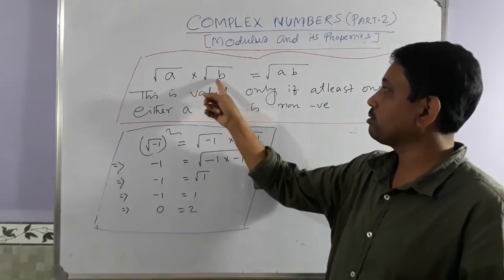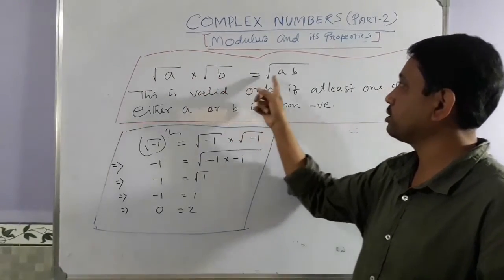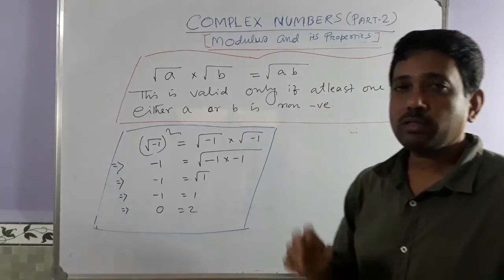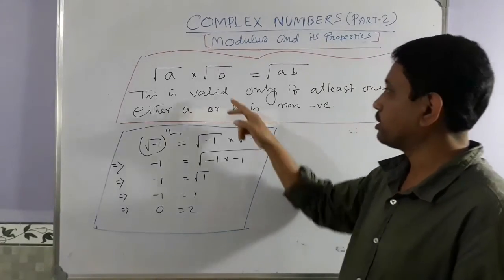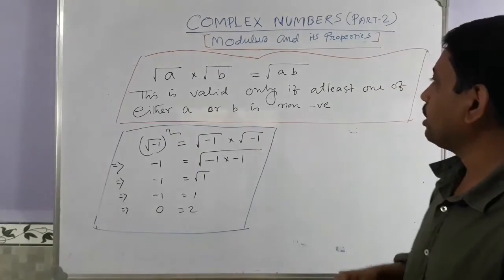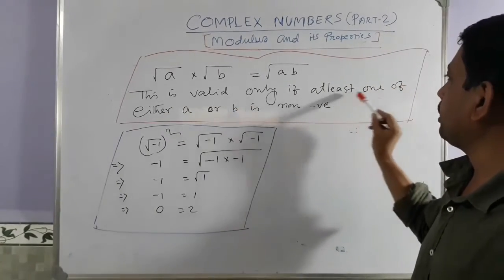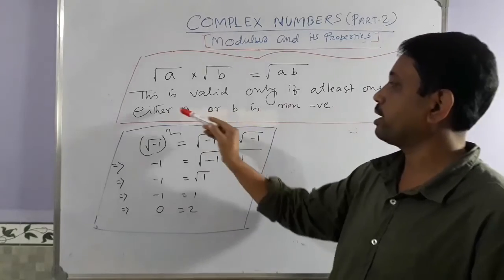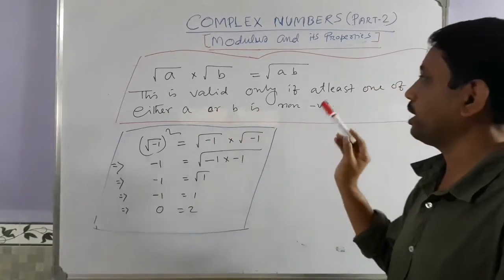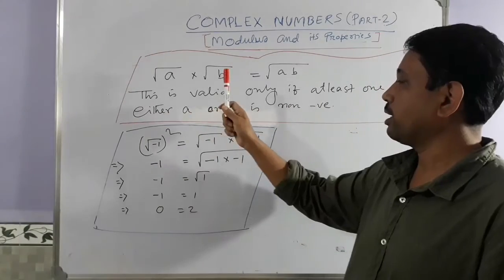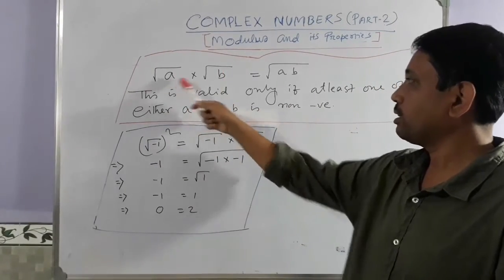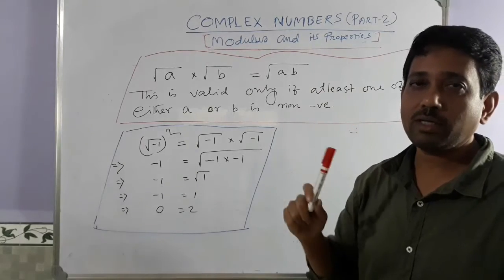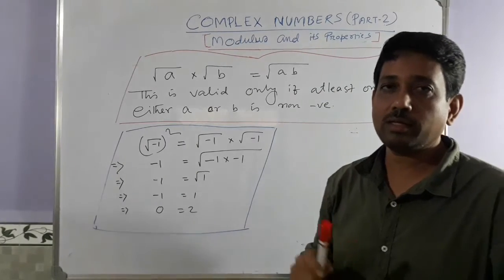The rule: √A × √B = √(AB). This is valid only if at least one of either A or B is non-negative. Then this holds good. Otherwise, it is invalid.